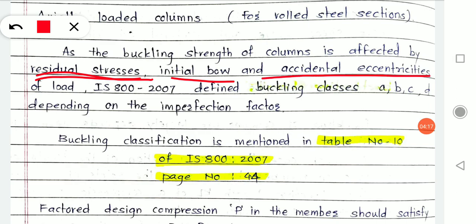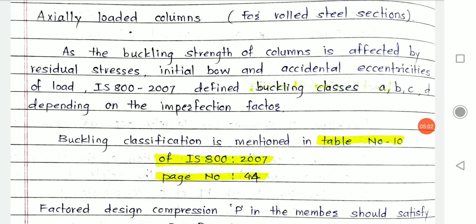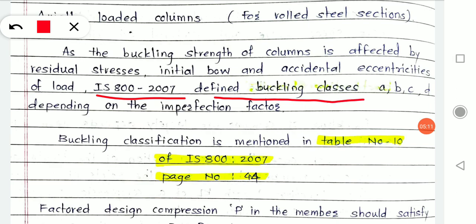Initial bow and accidental eccentricity refer to defects caused manually or due to machine errors. Accidental eccentricity means the load is supposed to be applied at the centre but has shifted from it due to accidental cause or manual error. All these things cause buckling and affect the buckling strength. IS code 800:2000 defines buckling classes to categorise what type of buckling occurs.